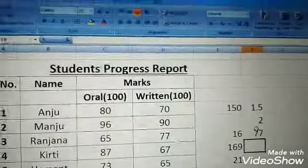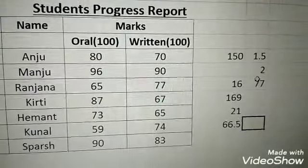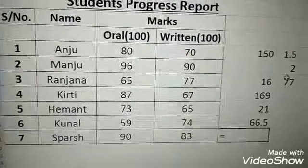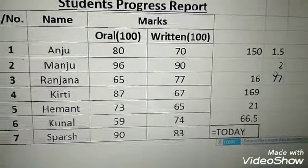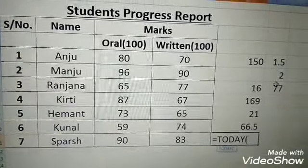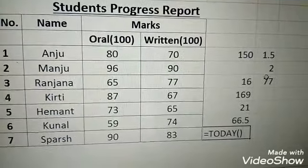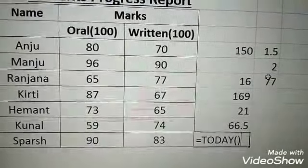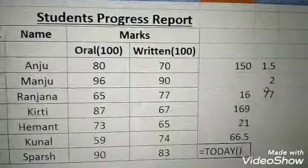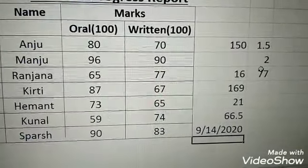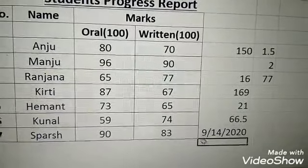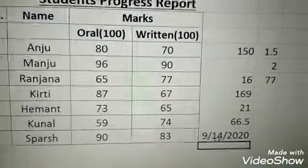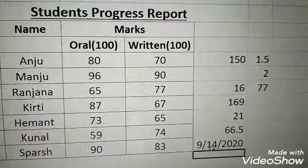Now the next function is the TODAY function. Using the TODAY function, we can find out the current date. We write equals to TODAY, then parentheses, and press Enter. For example, today's date shows as 14th September 2020. The format displayed depends on the date format set in your system.